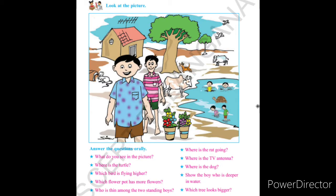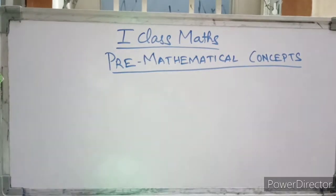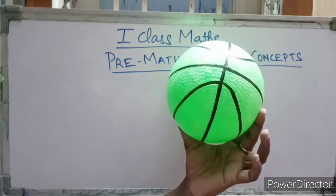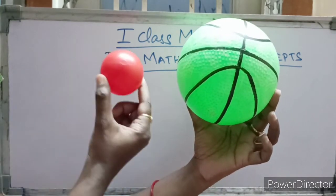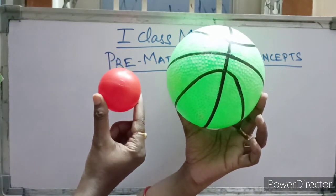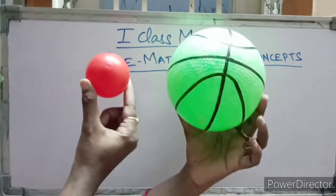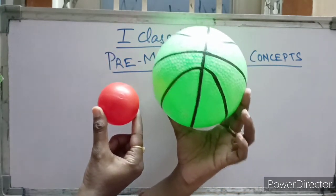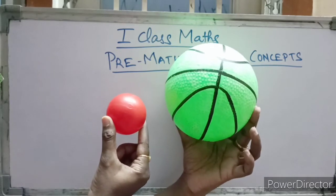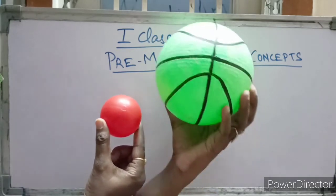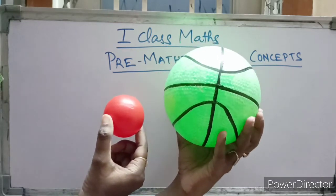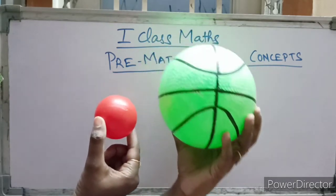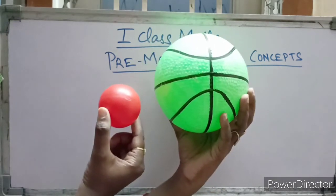Now let's see — look at this ball, kids. This is a green color ball. Now look at this ball — what color is this? By seeing these two balls, which is the bigger ball? The green color ball. Yes, green is bigger than red. Red is the small ball, green is the bigger ball.